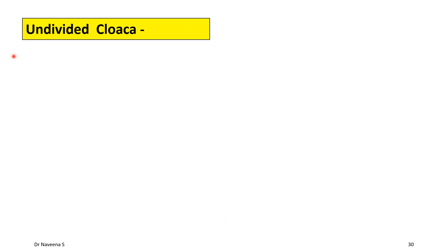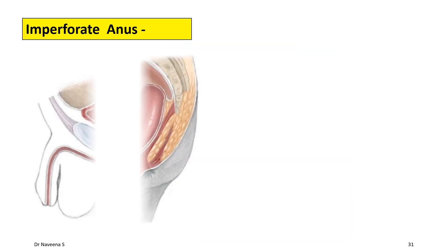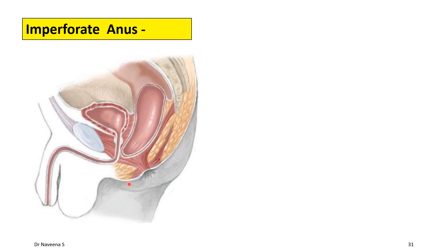Undivided cloaca: a rare condition where the urorectal septum fails to develop completely, so that the cloaca becomes undivided. It opens to the exterior after rupture of the cloacal membrane through a common perineal orifice, so that the definitive passages of the genitourinary system and alimentary system will have a common perineal outlet. Such a phenomenon is normally seen in birds.